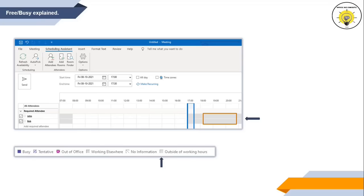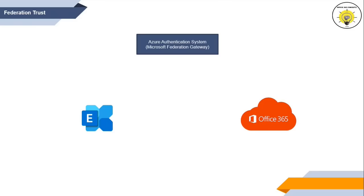Before we jump into FreeBusy working, let me discuss a few important concepts. The first important concept is Federation Trust. A Federation Trust creates a trust relationship between two different organizations. When you sign up for an Office 365 tenant, a Federation Trust is automatically created with the Microsoft Federation Gateway.